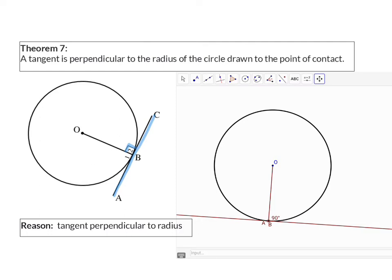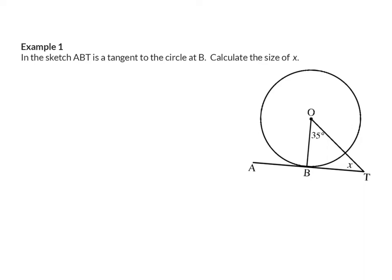Let's now have a look at how we're going to use this theorem. Example 1: in this sketch, ABT is a tangent to the circle at point B, and they are asking us to calculate the size of X. Our new theorem says that the angle at B will be 90 degrees because it is perpendicular to the radius. So angle OBT is 90 degrees. My reason: tangent perpendicular to radius.